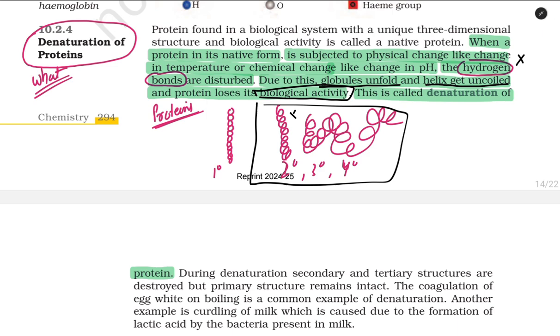Now this can be done by changing temperature or even sometimes by changing pH also. So whenever we change temperature or we change pH, the hydrogen bonding of the protein chains gets disturbed and gets broken down.